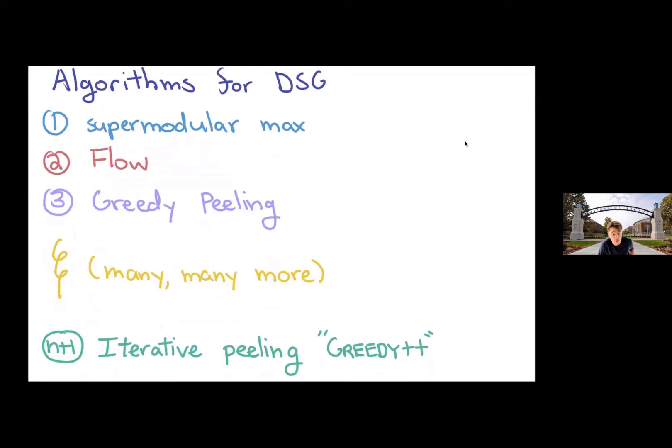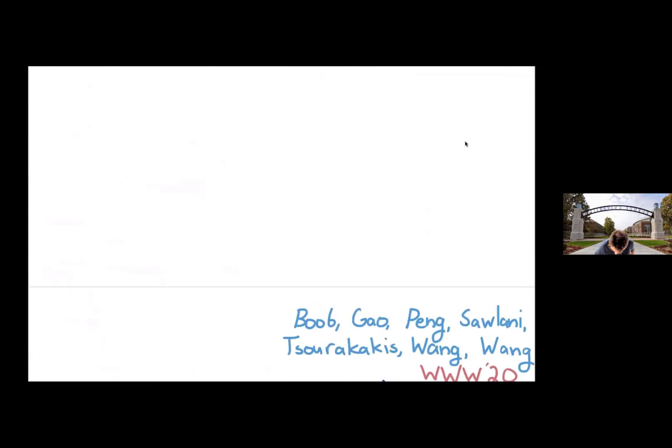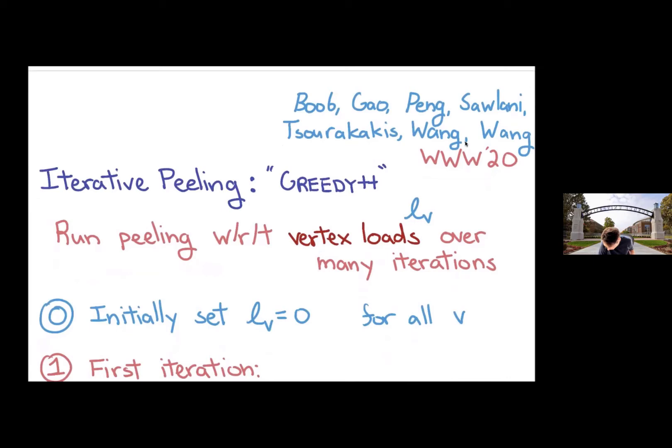So let me explain. This is an algorithm proposed by Bu, Gao, Peng, Solani, Tsurakakis, Wang, and Wang. And so the idea is to try to take that original peeling heuristic, which already performs pretty well in practice, and try to improve it in some iterative framework.